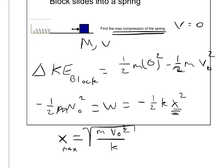And this will find our maximum x compression of the spring because the block loses all of its kinetic energy, and it loses it because of the work done by the spring.